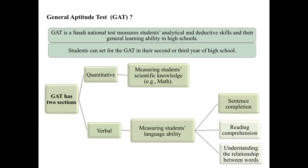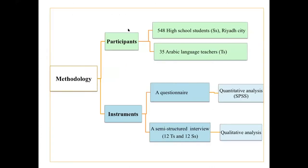The General Aptitude Test (GAT) is the Saudi national test that measures students' analytical and deductive skills and their general learning ability in high school. Students can sit for the test in their second or third year of high school. The GAT has two sections: a quantitative section measuring scientific knowledge like math and science, and a verbal section measuring students' language ability, focusing on their ability to make complete and clear sentences, reading comprehension, and understanding the relationship between words in Arabic.